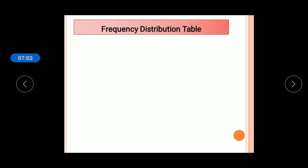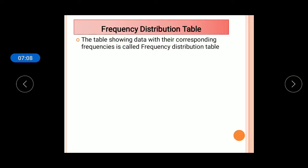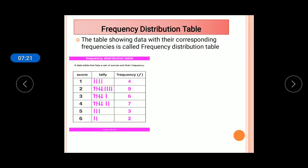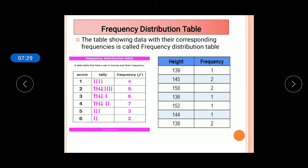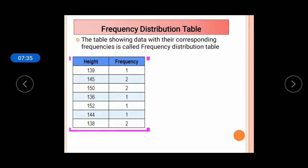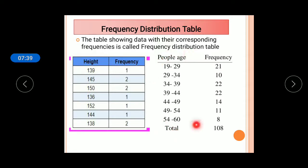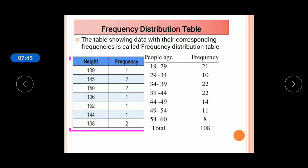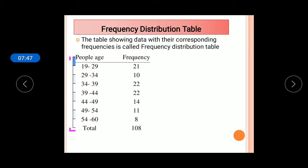For tabular representation, the tables used are called frequency distribution tables. A frequency distribution table is defined as a table showing data with their corresponding frequencies — observations alongside their corresponding frequencies. It can also include class intervals and frequency columns.